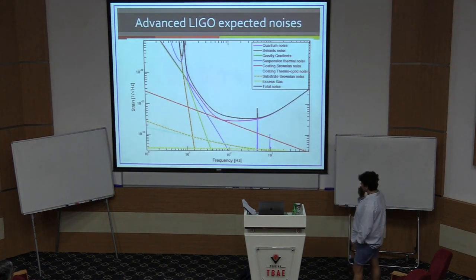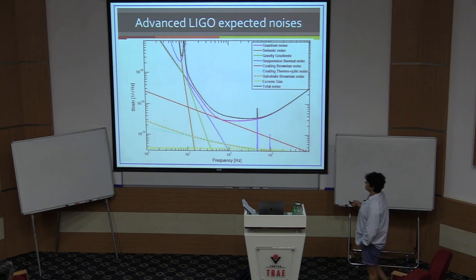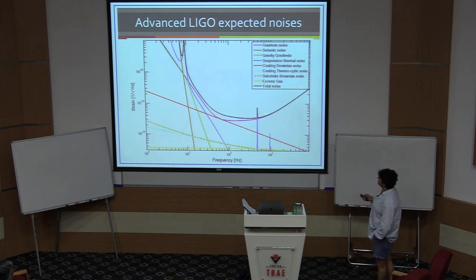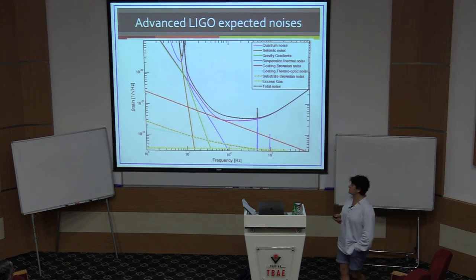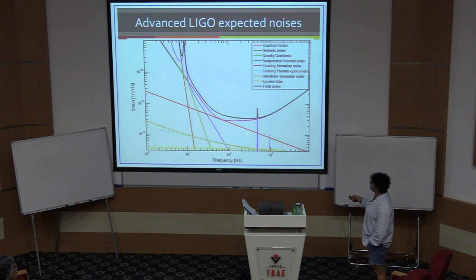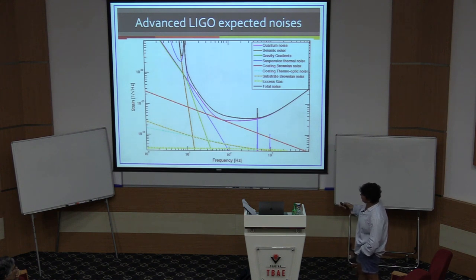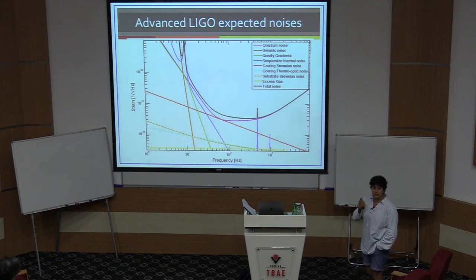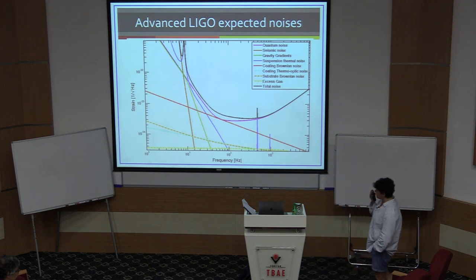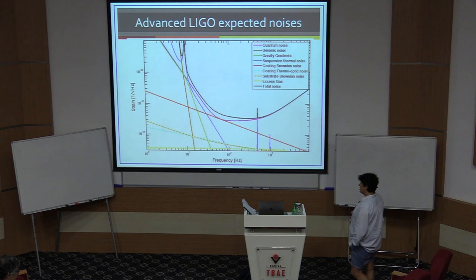You've seen this plot before — these are the expected noise sources for advanced LIGO. I want to zoom in today on the quantum noise, which is the magenta curve. If you look at the black curve, the total noise for advanced LIGO, it is almost completely dominated by quantum noise. A little bit around 80 hertz the coating thermal noise matters, but everywhere else quantum noise dominates. It's a very important noise source and one we have to solve if we want to do better. Today's lecture is about what causes this noise source and how we do better.